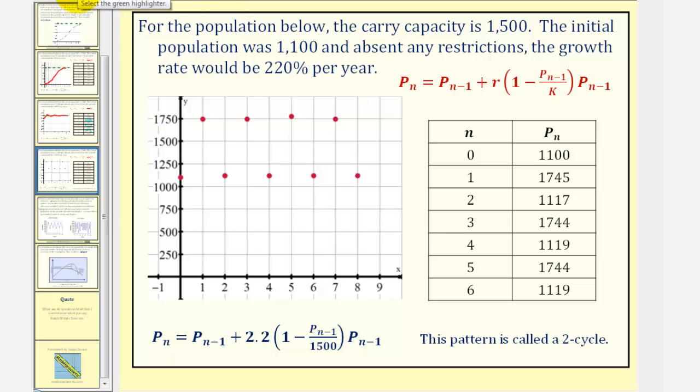Analyzing the table, notice how, again, P sub one, P sub three, and P sub five all have population levels above the carrying capacity of 1,500. Another example of overshoot.